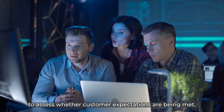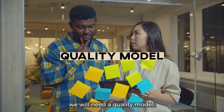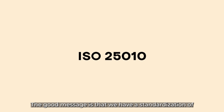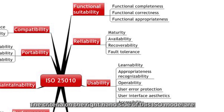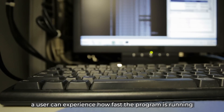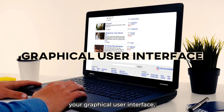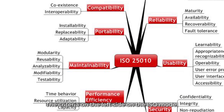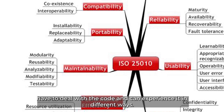First of all, to assess whether customer expectations are being met, quality metrics have to be used, and for measuring and comparing code quality, we will need a quality model. A respected quality model is the ISO 25010. The good message is that we have a standardization of what code quality is composed of. The criteria on the right-hand side of the ISO model are external qualities, meaning this can be experienced by the end user. For example, a user can experience how fast the program is running on his desktop or smartphone. He can also experience the aesthetics of your website, your graphical user interface, meaning if it looks beautiful and attractive or not.